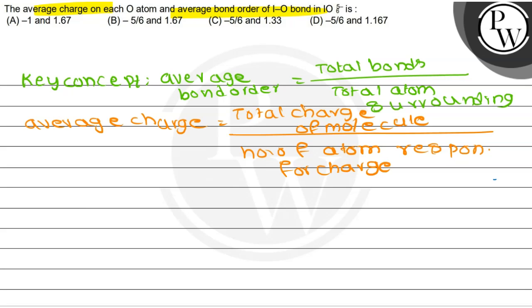By using these formulas on the structure, we can determine the average charge as well as the average bond order. Coming to the structure of IO₆: there is 1 O, another O, another O, another O, another O, and another O — totally 6 oxygens present around I.